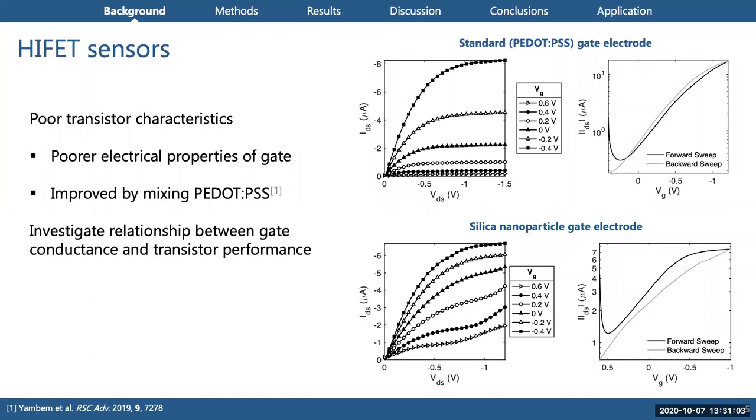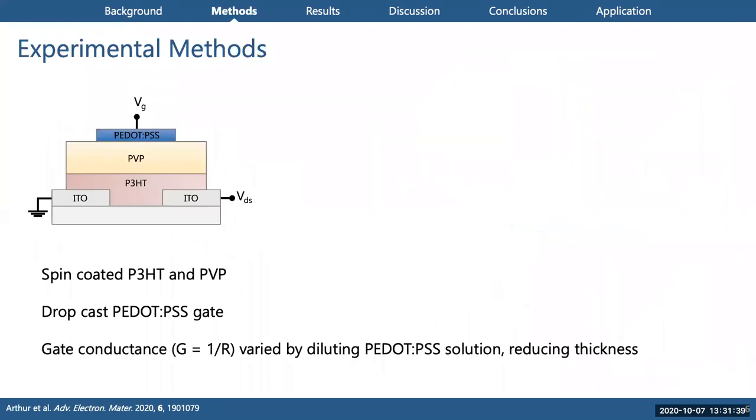We naturally attributed this to the much poorer electrical properties of the new gate electrode compared with the standard gate, which is PEDOT:PSS, a conductive polymer that's very standard for HIFETs. To address this problem, we tried combining the nanoparticles with PEDOT:PSS, and the increased gate conductance was very clearly associated with improved transistor performance. So we decided to do a more systematic study to investigate this relationship.